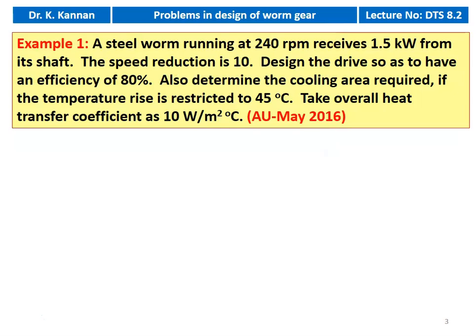Example number 1. A steel worm running at 240 RPM receives 1.5 kilowatt from its shaft. The speed reduction is 10. Design the drive so as to have an efficiency of 80 percent. Also determine the cooling area required if the temperature rise is restricted to 45 degree Celsius. Take overall heat transfer coefficient as 10 watts per meter square degree Celsius. This question appeared in the May 2015 question paper.